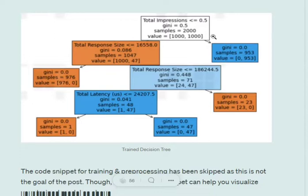This is the structure of the decision tree that we have got after training. The first node splits on total impressions and the impurity being used is the Gini index. The total samples used in the training dataset is 2000, out of which each class has 1000 samples each.